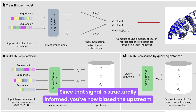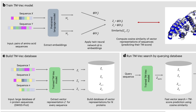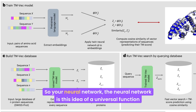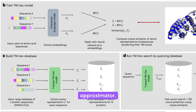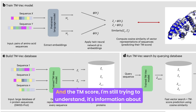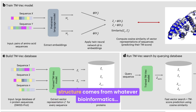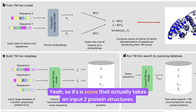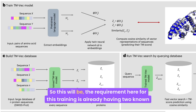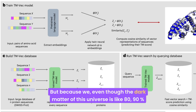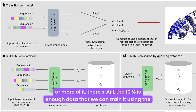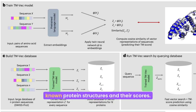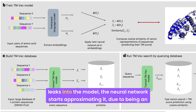The model takes as input two proteins, gets their language model representations, does some downstream processing, and computes a dot product — returning a single number you want to be as close to the real TM score as possible. In this process, since that signal is structurally informed, you've now biased the upstream embeddings to be structurally informed. The neural network is a universal function approximator getting information about structure from this TM score. The TM score training requires two known structures — but even though the dark matter of this universe is 80-90% unannotated, that remaining 10% is still enough data to train it using known protein structures and their scores.